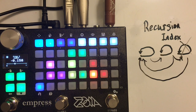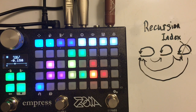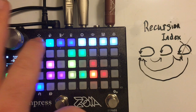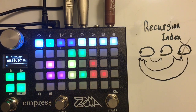You get these notes of rising value, lower notes, and it really sort of fills out the sonic field. That's the basic structure of the looper.